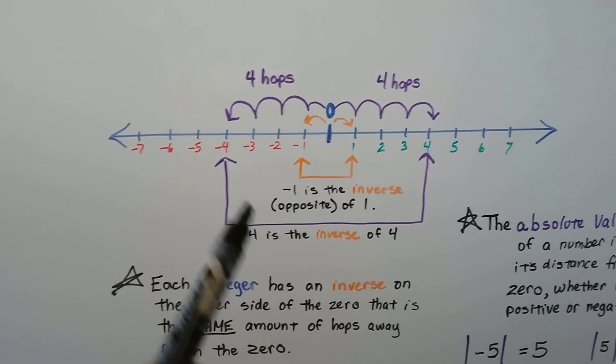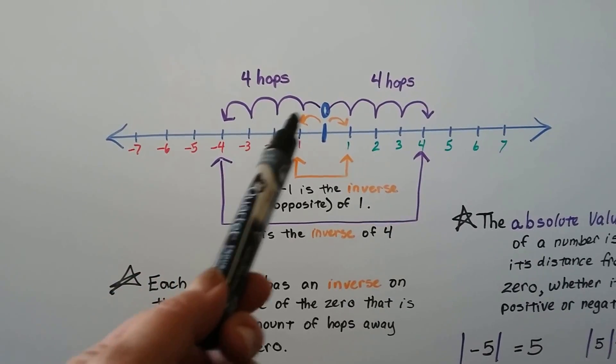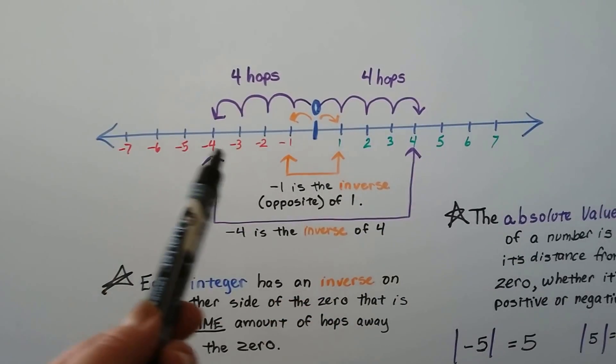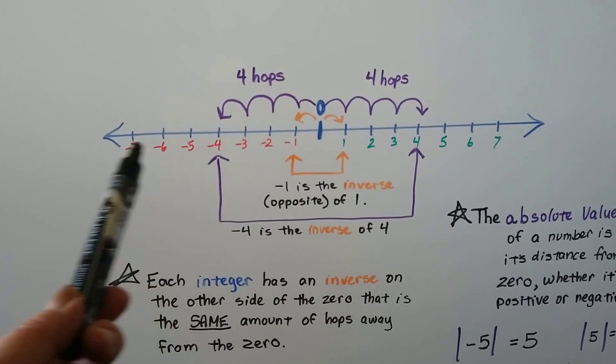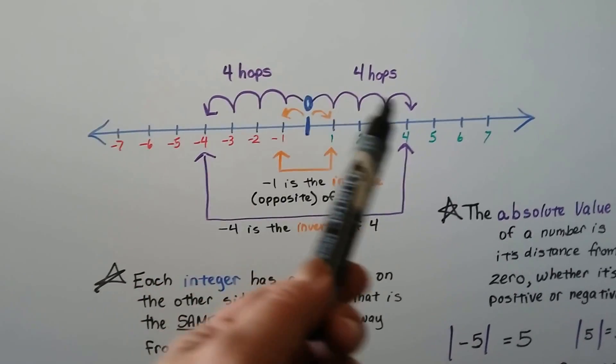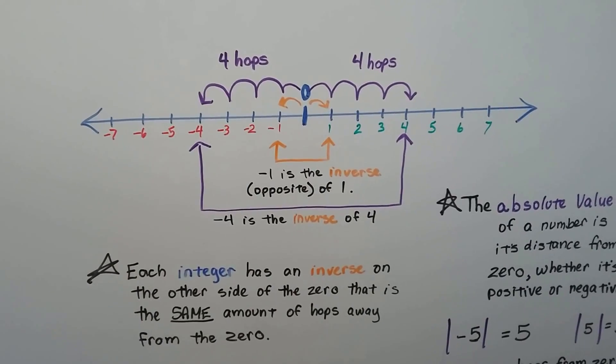So negative 1 is 1 hop away from 0, just like positive 1 is. Negative 4 is 4 hops away from 0, just like positive 4 is. So it doesn't matter what number you pick, which integer you pick, it's going to have an opposite on the other side of 0 that's the same number of hops away.